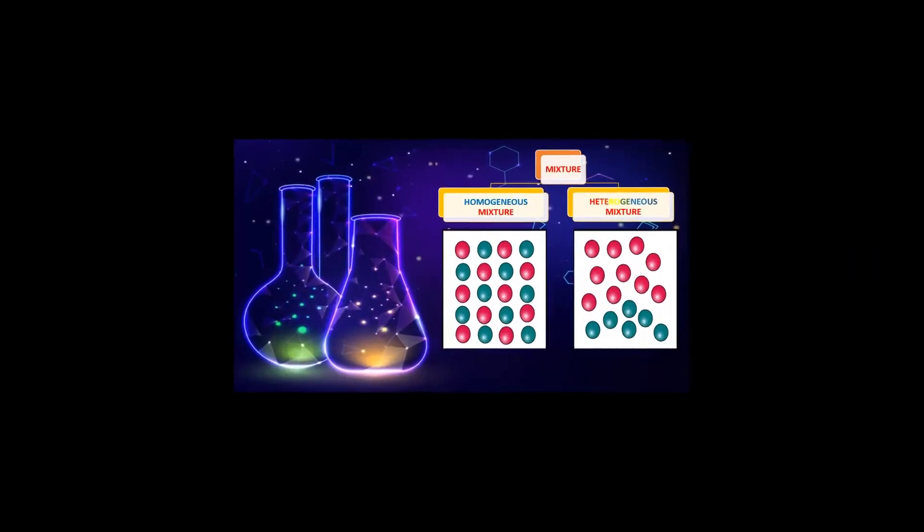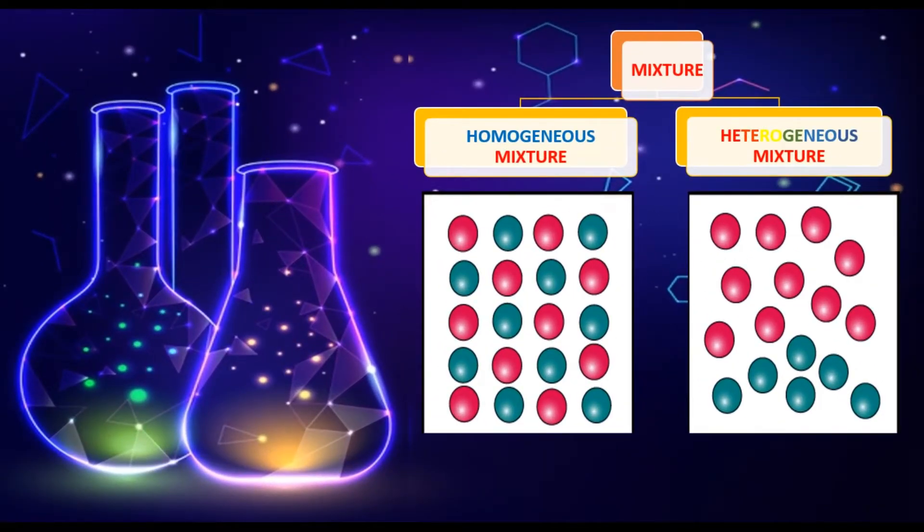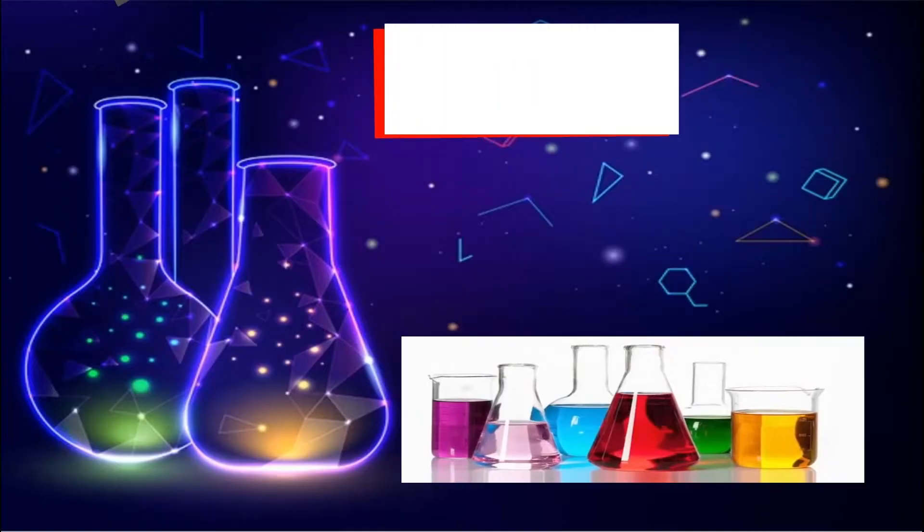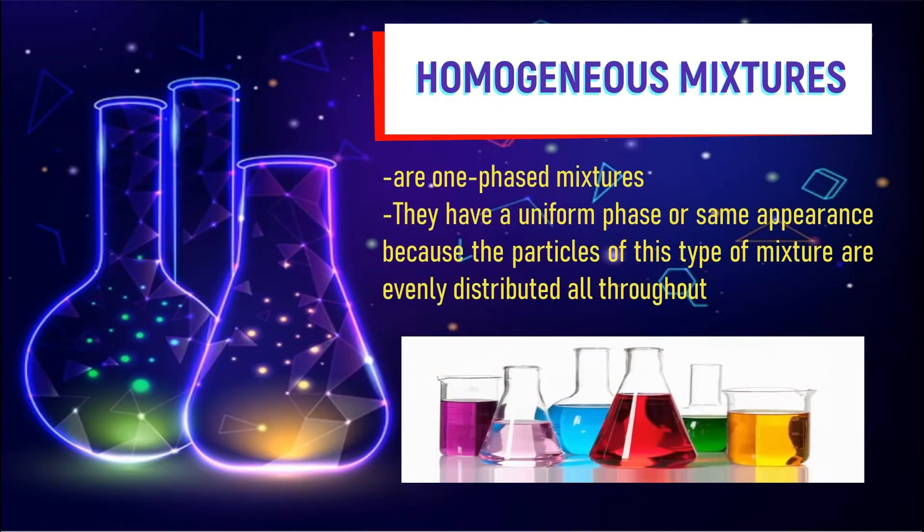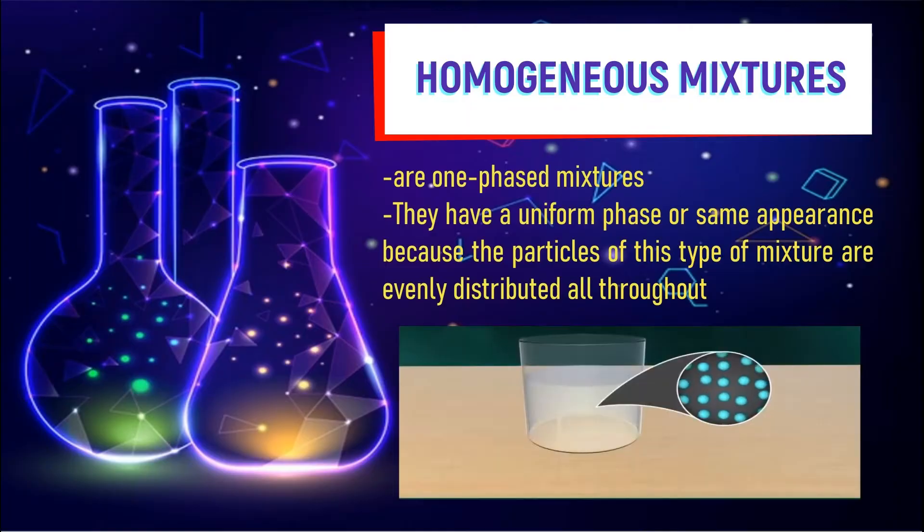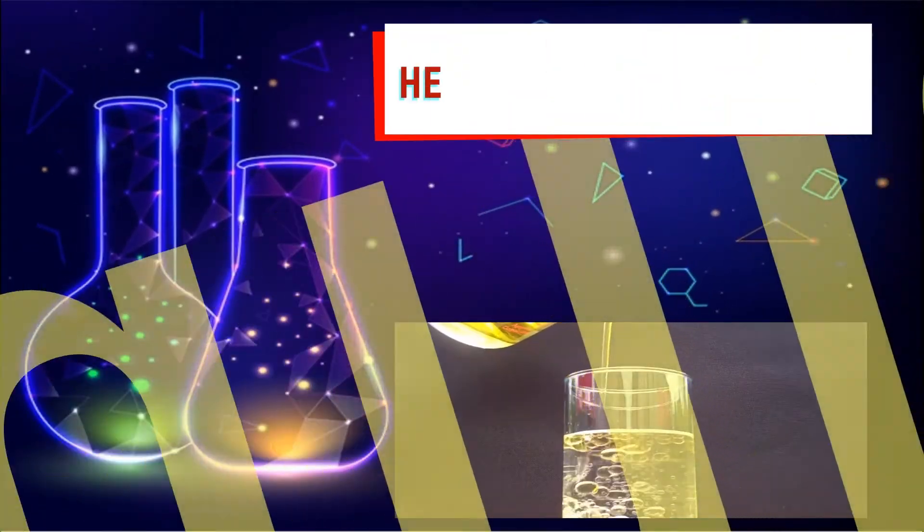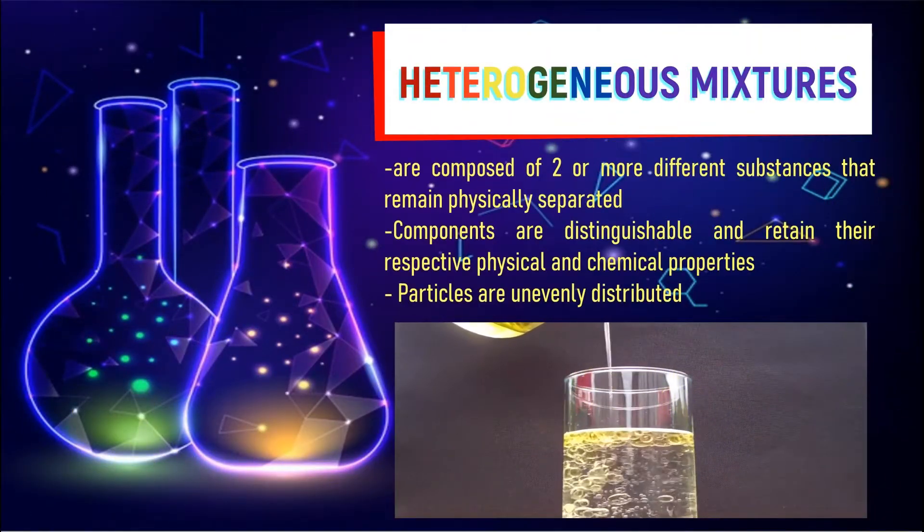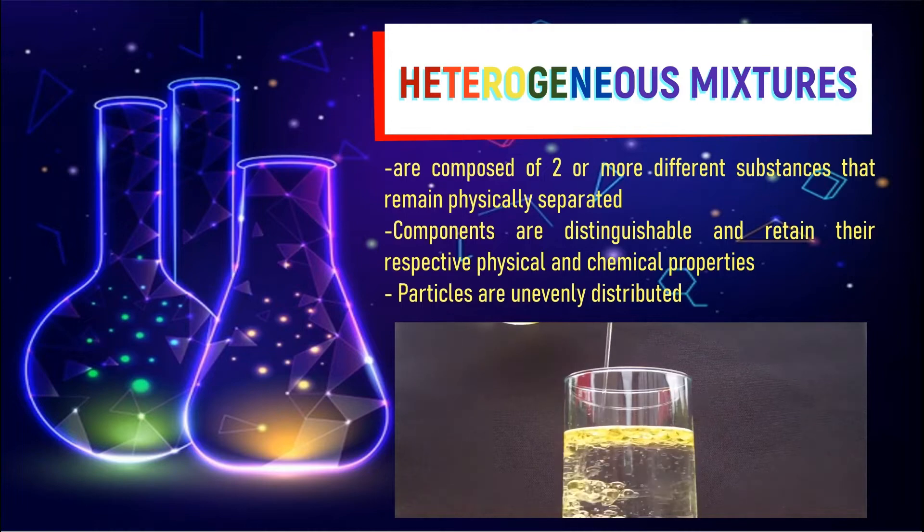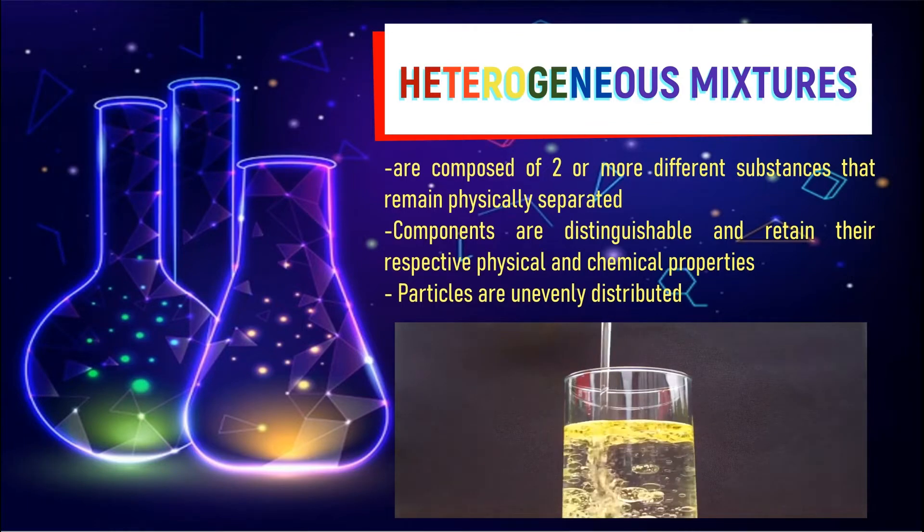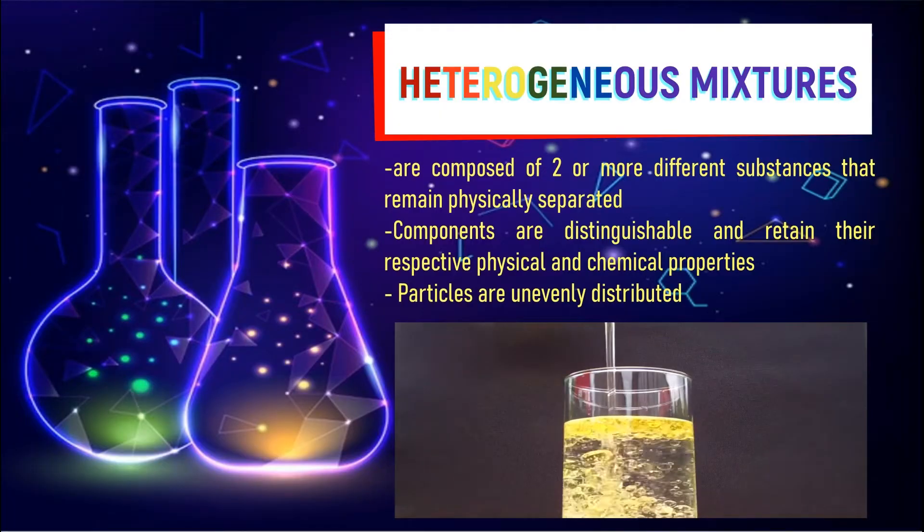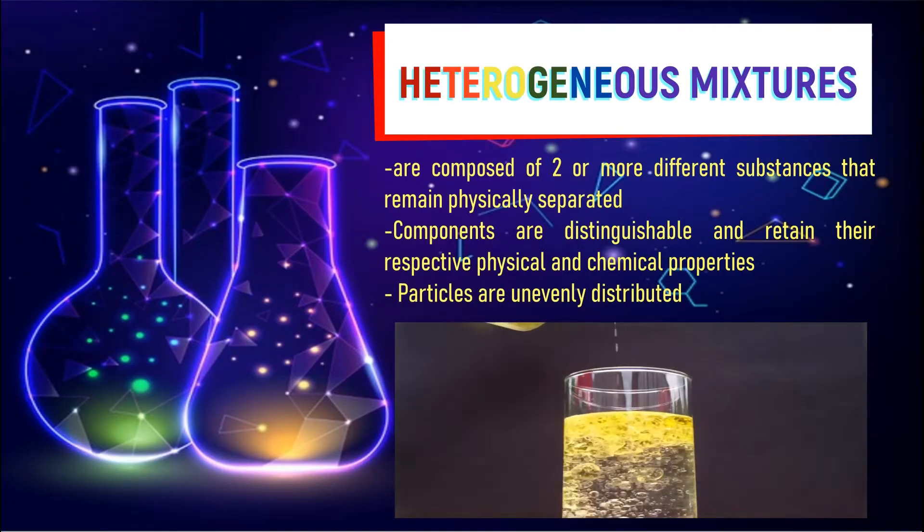Mixtures are subdivided into homogeneous and heterogeneous mixtures. Let us now distinguish one from the other. Homogeneous mixtures are one-phase mixtures. They have a uniform phase or a uniform appearance. While heterogeneous mixtures are mixtures composed of two or more substances that remain physically separated. The components of these mixtures are distinguishable and retain their physical and chemical properties.